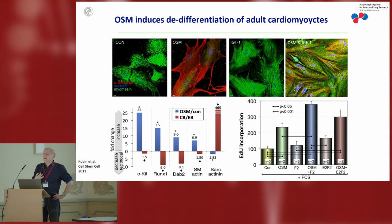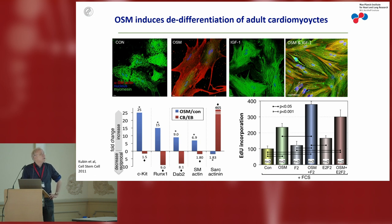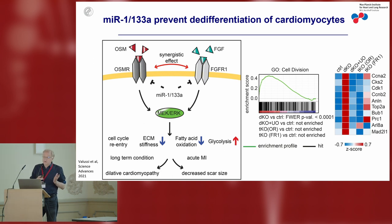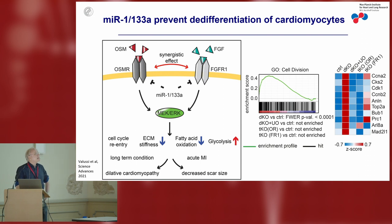What we also noticed is that these types of interventions are not sufficient to induce cytokinesis. We do see a certain degree of EDU incorporation in de-differentiated cardiomyocytes, but we never actually observed cytokinesis. Even if we strongly boost this process — and this can be done by removing microRNA-133A from cardiomyocytes, which under normal conditions represses the receptors for OSM and FGF to a very strong degree — even with increased receptor expression and a dramatic increase in cell cycle gene expression, we never observed bona fide cytokinesis.